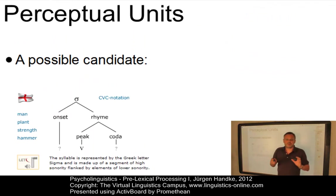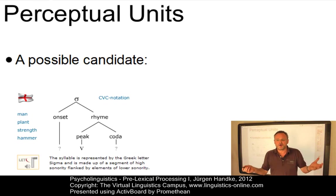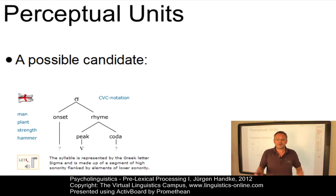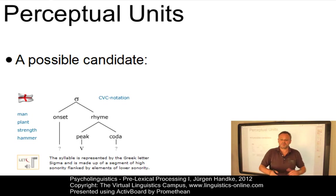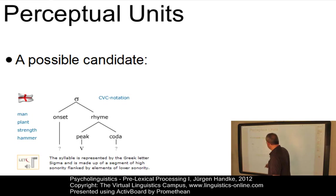Studies into language acquisition, especially infant speech processing, suggest that the fundamental unit of speech perception corresponds roughly to the syllable. The central argument is the unavailability of obvious cues that facilitate the segmentation process. Despite the absence of such cues, children are capable of acquiring their lexicon even though they have little or no information about the phonological properties of words. Hence, they must process some sort of information — perhaps innate — about the properties that distinguish one word from another. This information seems to be based on the syllable.